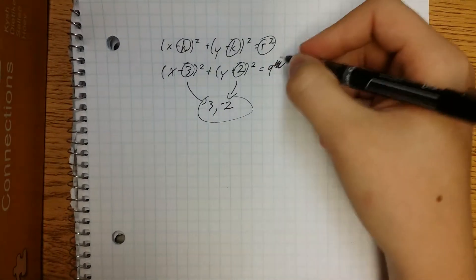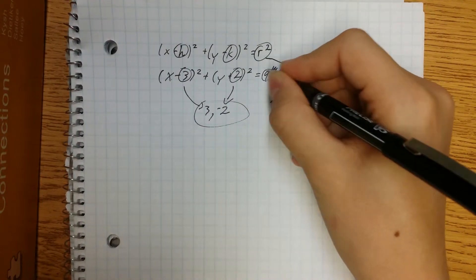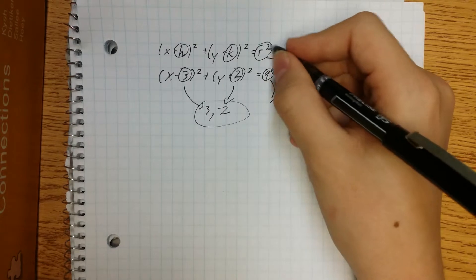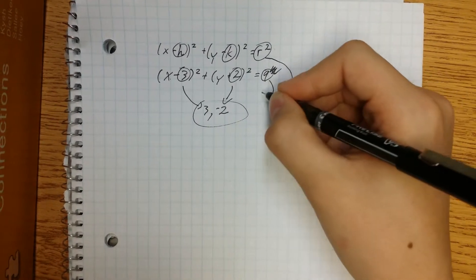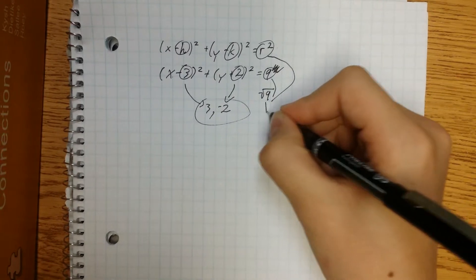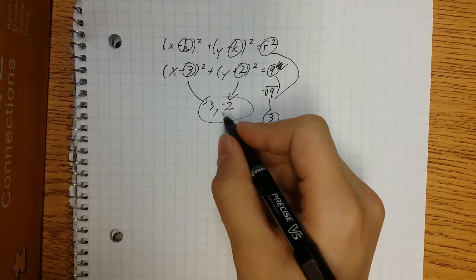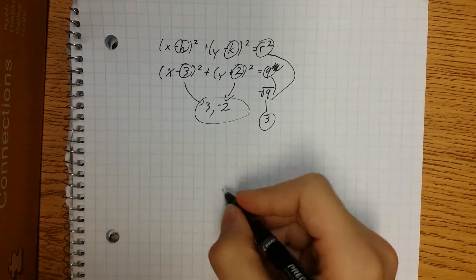Our radius is going to be this number, but see how it's squared up here? That means we need to take the square root of 9, which gives us 3. So that's our radius, and this is our center. Now let's graph it.